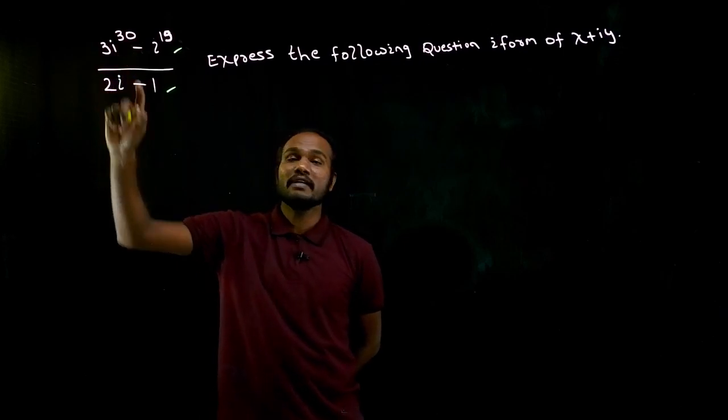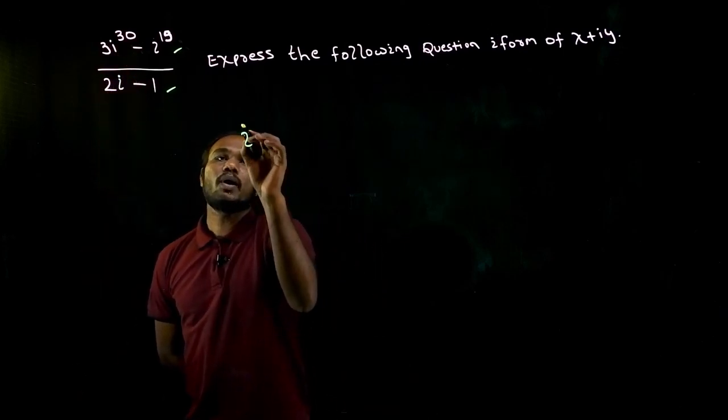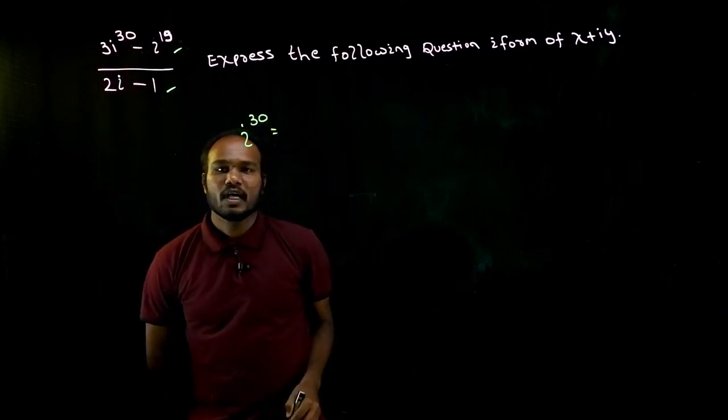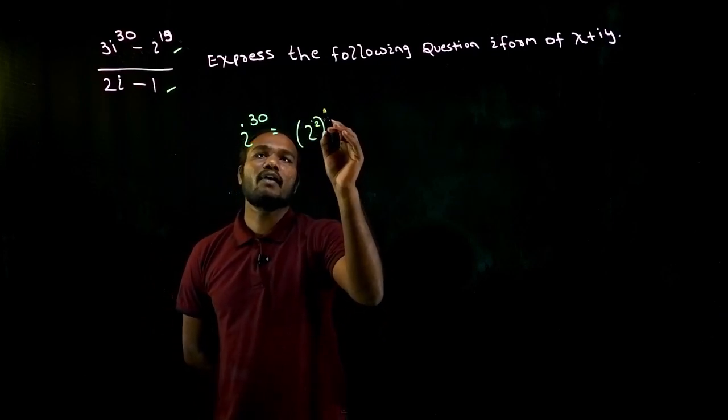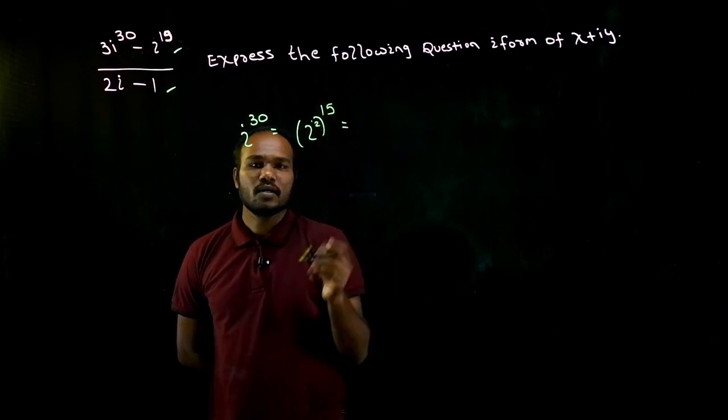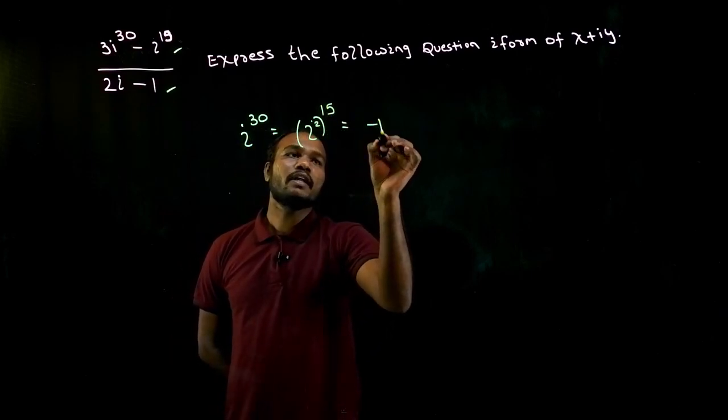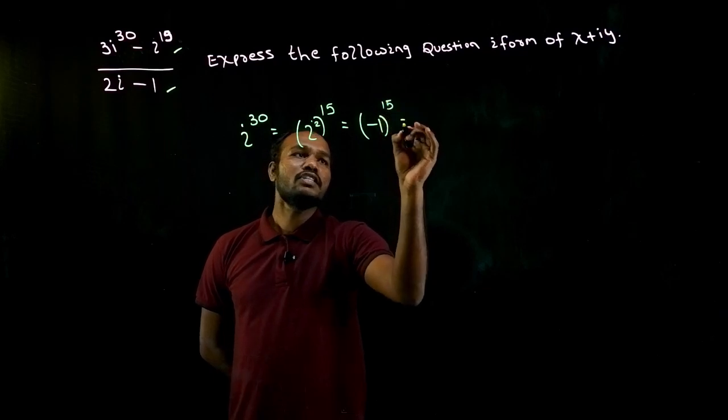But in the numerator we have i power 30. So we need to know how to calculate i power 30. i power 30 is nothing but i square power 15, isn't it? What is i square value? i square value is minus 1, so minus 1 power 15 is how much? Minus 1.